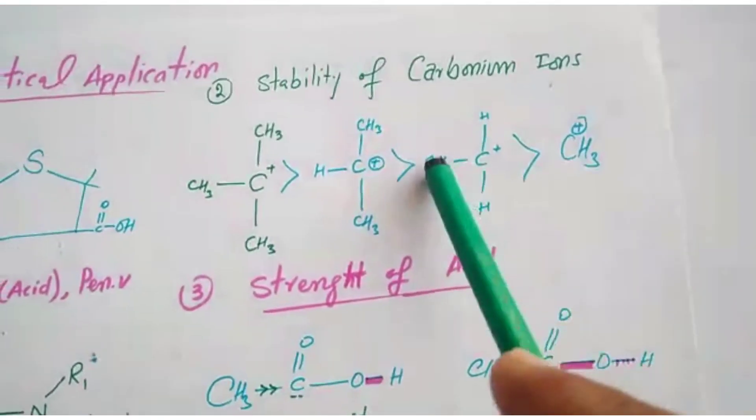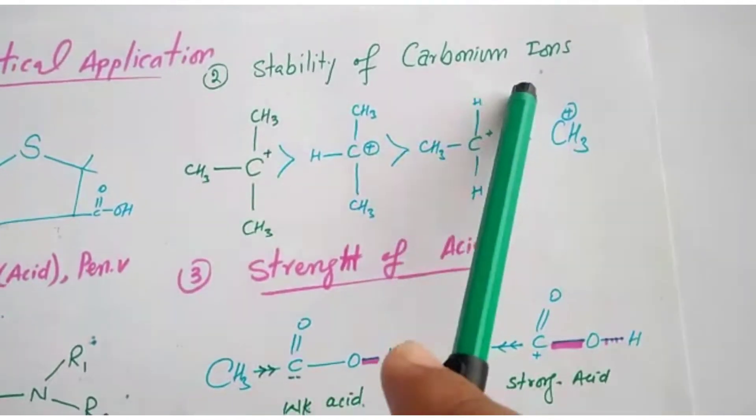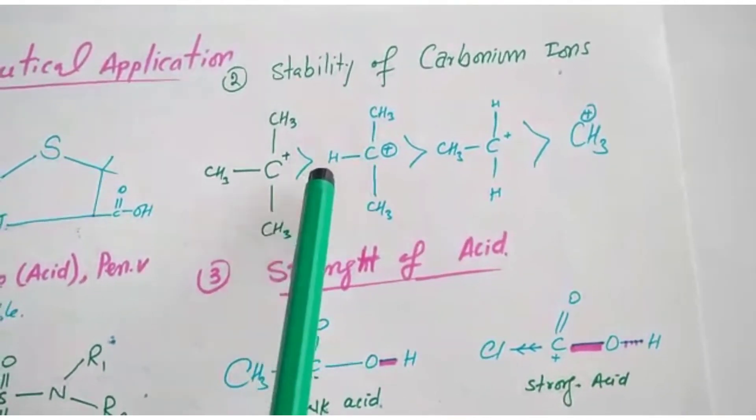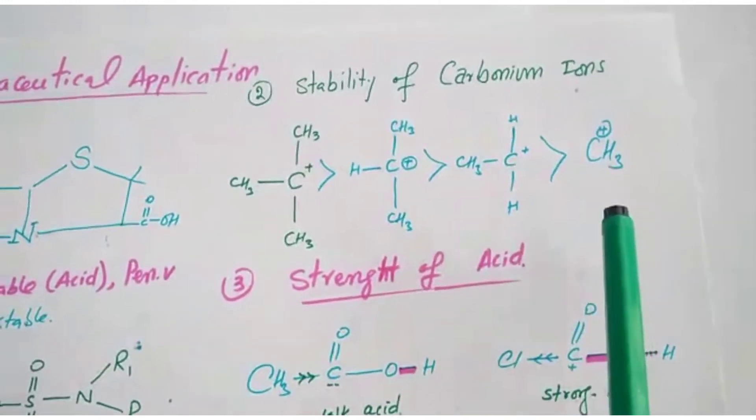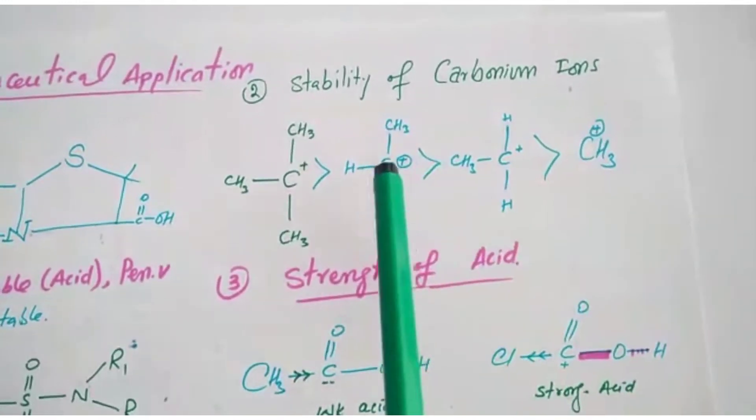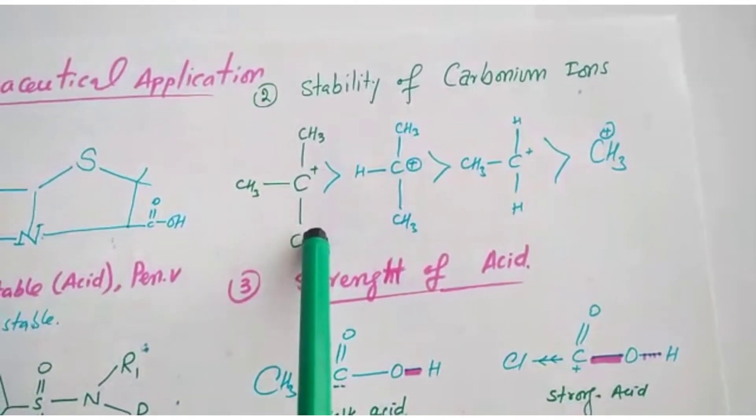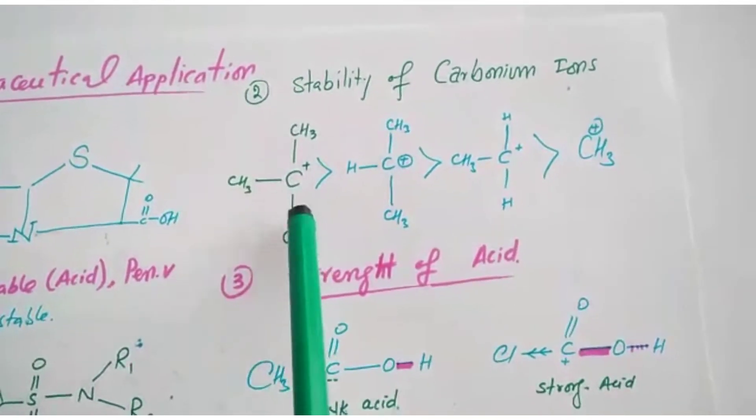Number three, application number two, stability of carbonium ion. This is tertiary carbonium ion, secondary carbonium ion, primary carbonium ion. In case of tertiary carbonium ion, one, two, three, three alpha carbons are here, three methyls are here.